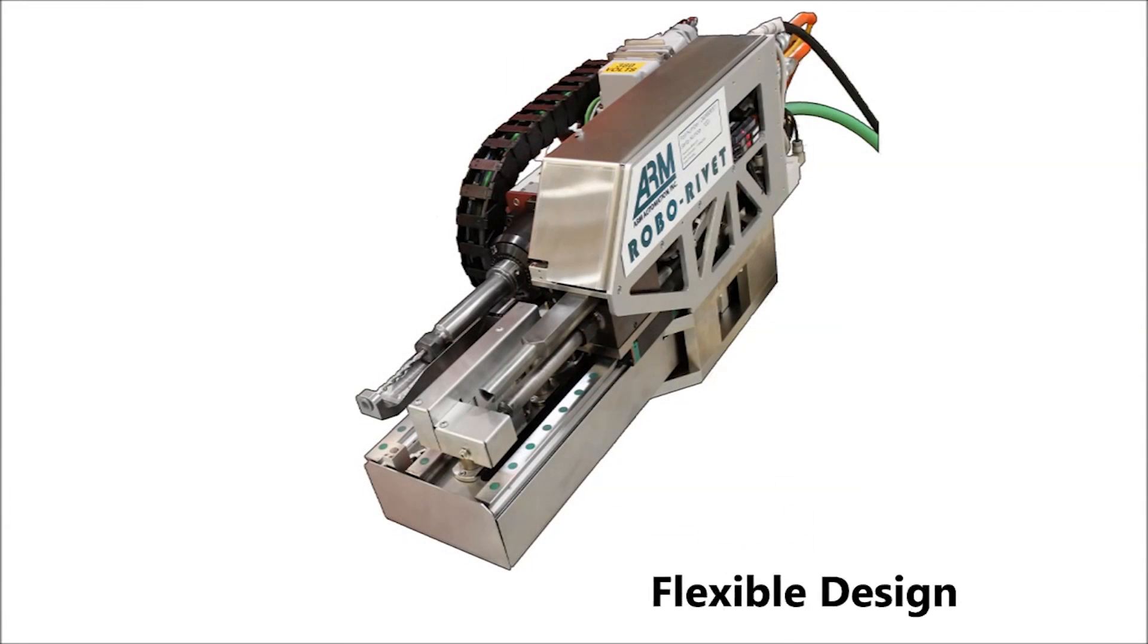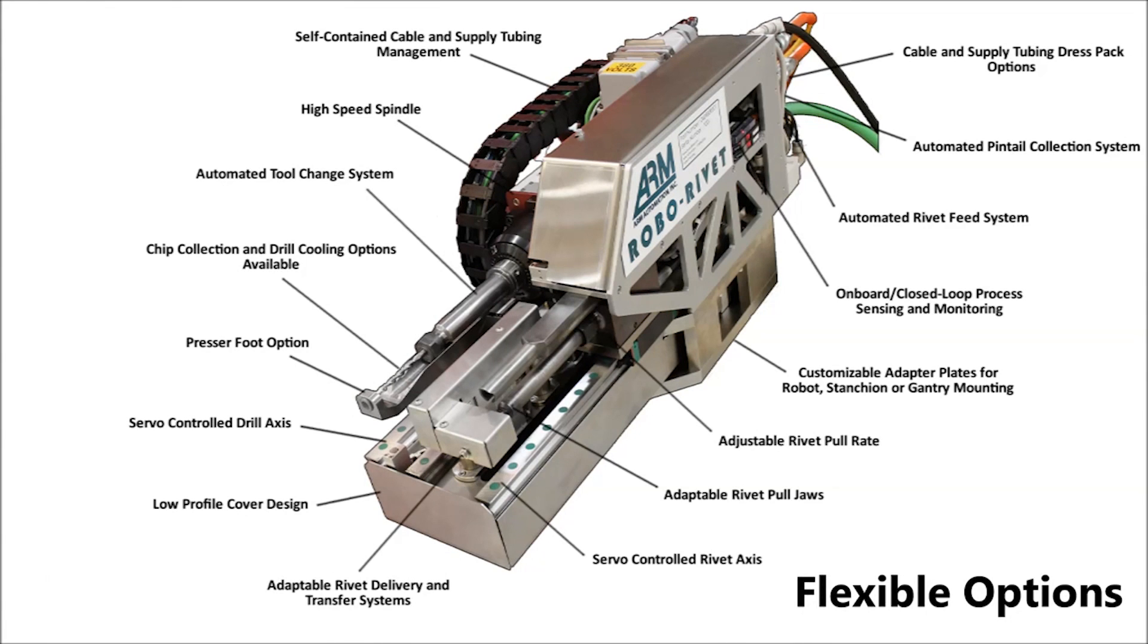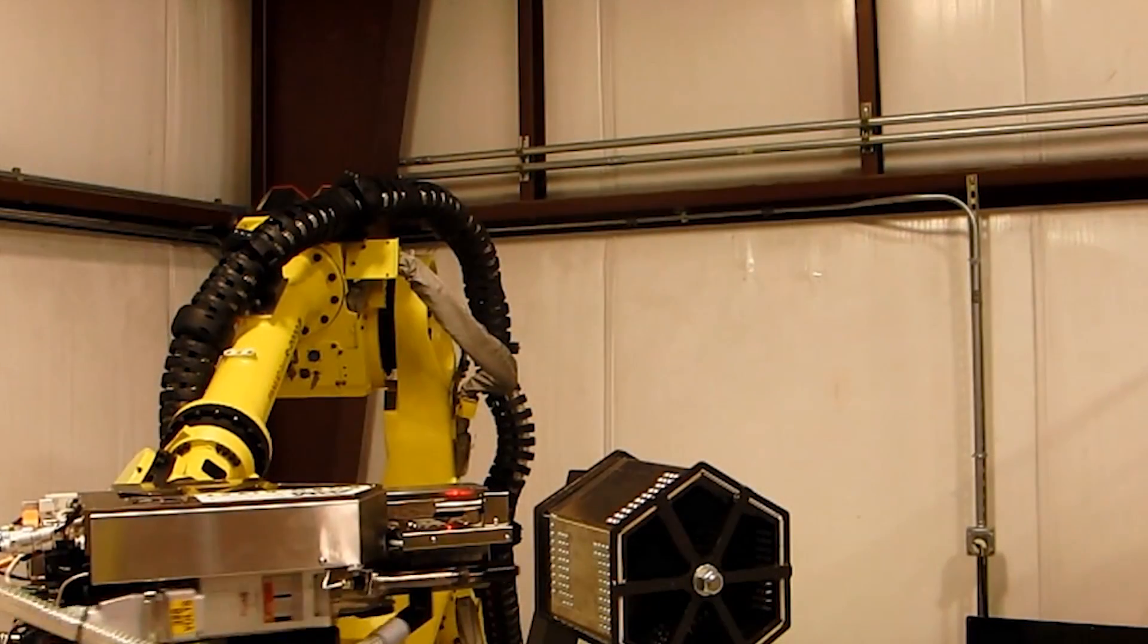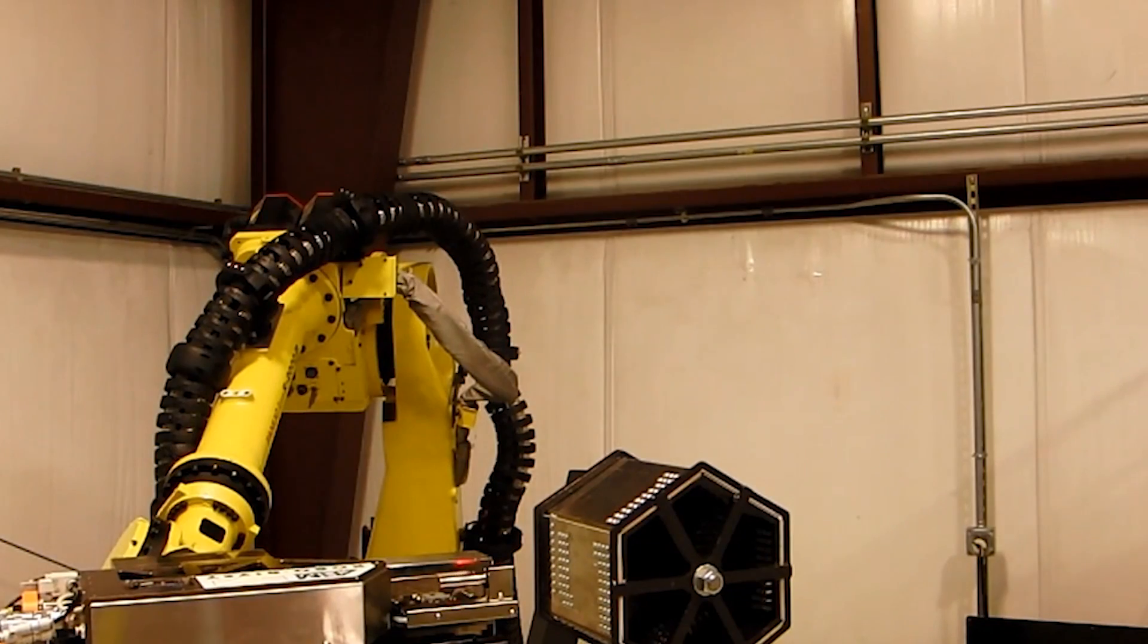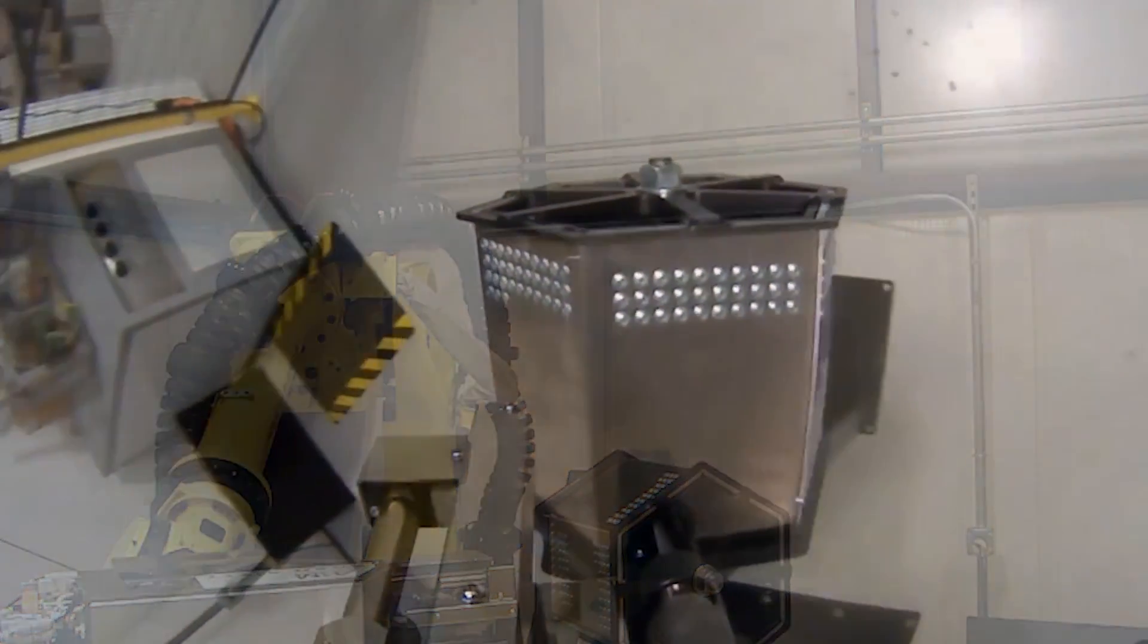In contrast to some ultra-specialized aerospace drill and rivet systems, which can be very expensive and take minutes per fastener, the Robo-Rivet system from Arm Automation can place up to 10 fasteners per minute at a fraction of the cost.